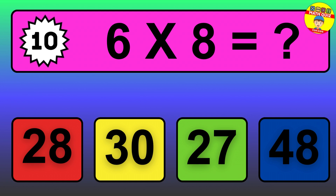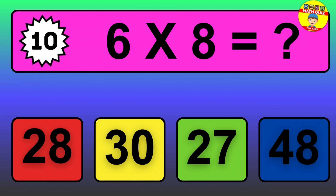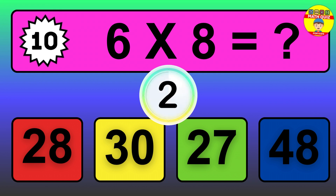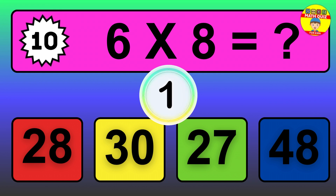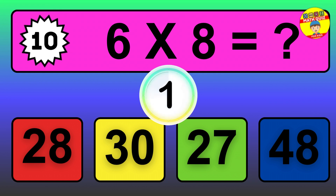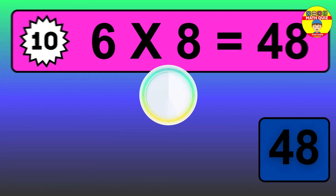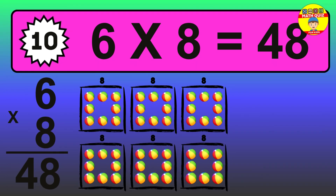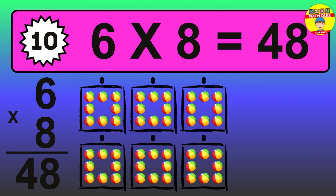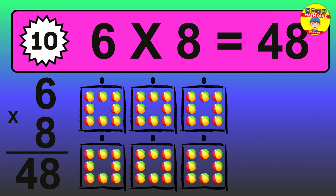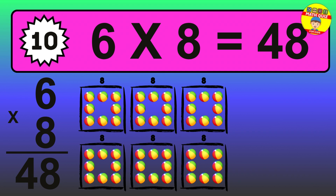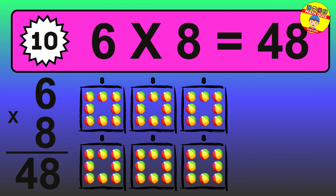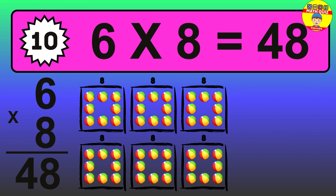Question 10. 6 times 8 equals what? The answer is 6 times 8 is 48. To calculate, we have 6 groups with 8 balls each one. So, how many balls do we have? 48 balls.